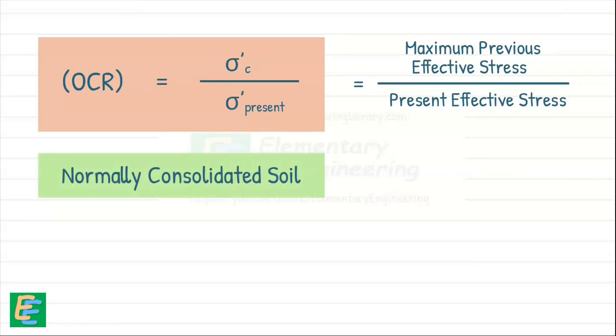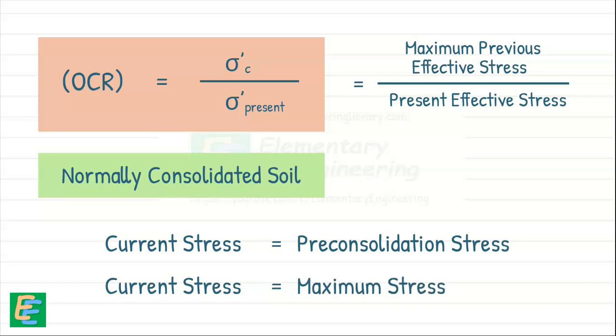For normally consolidated soil, current stress will be equal to its pre-consolidation stress. This means current stress is the maximum stress on the soil. Then for normally consolidated soils, OCR is equal to 1.